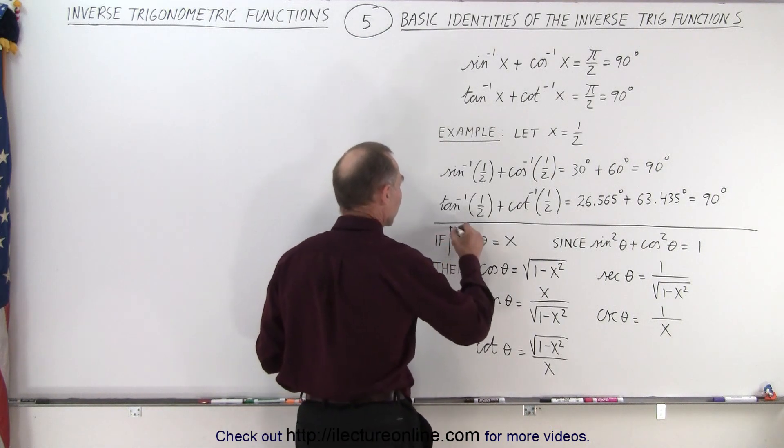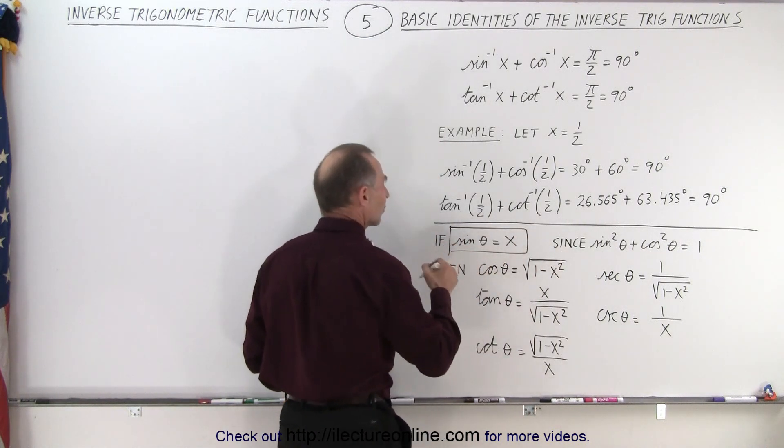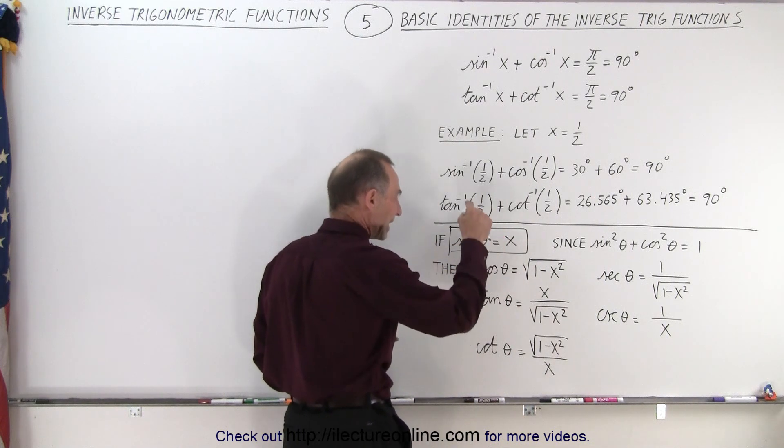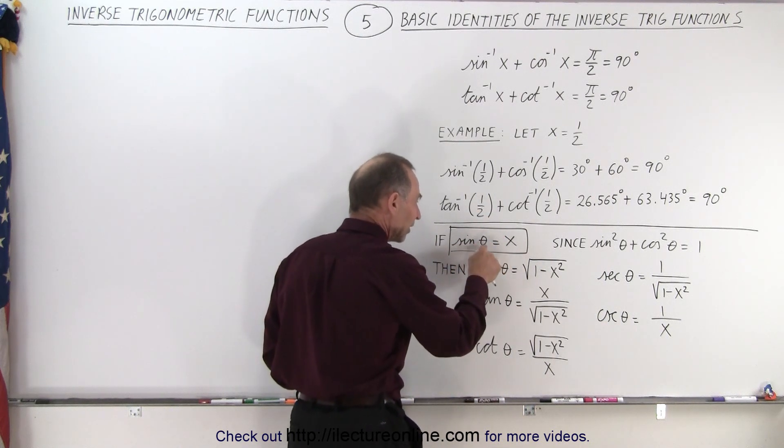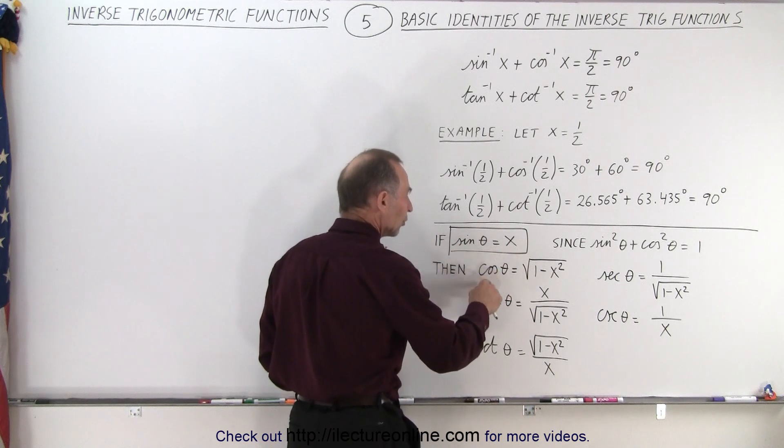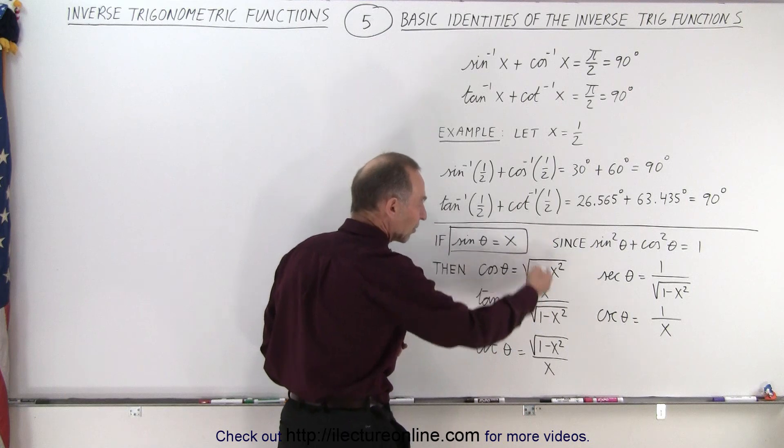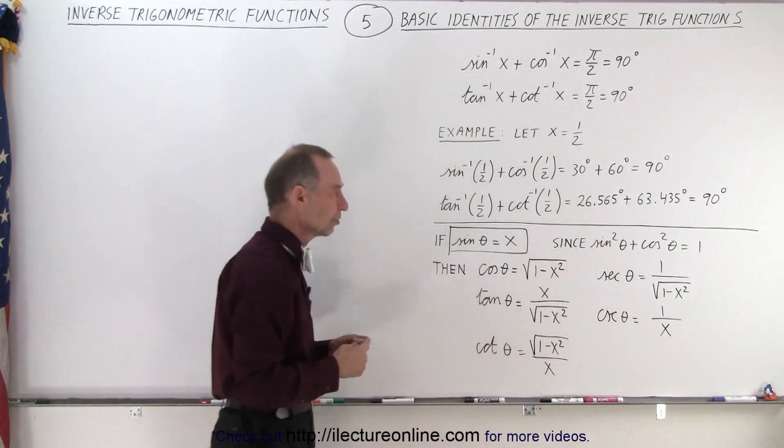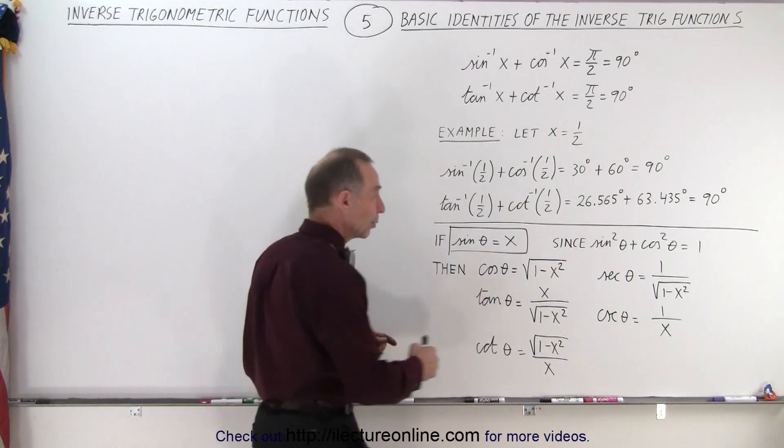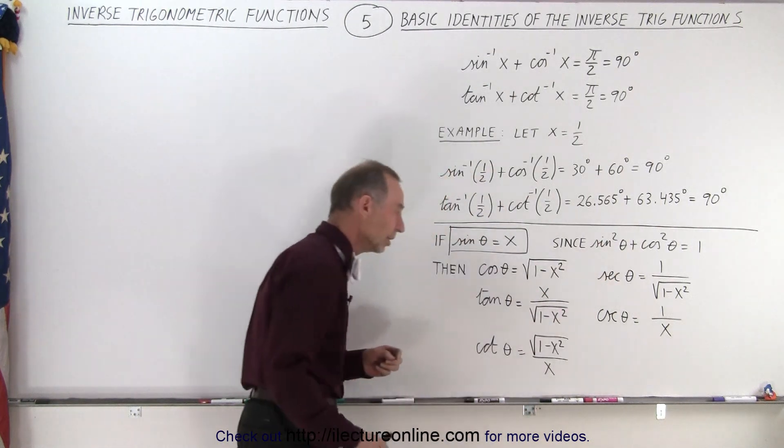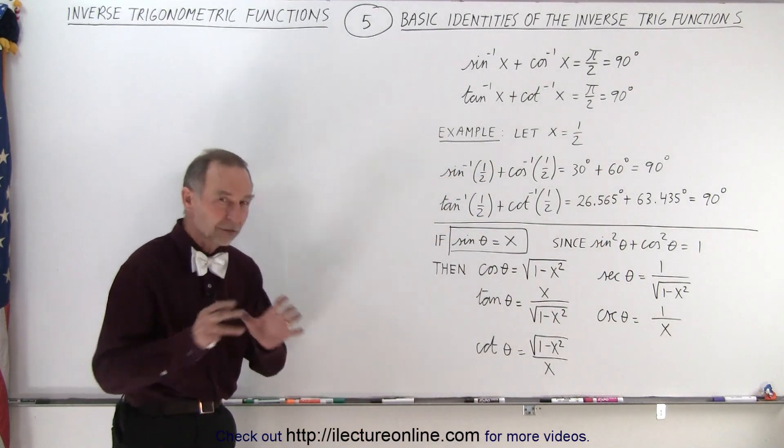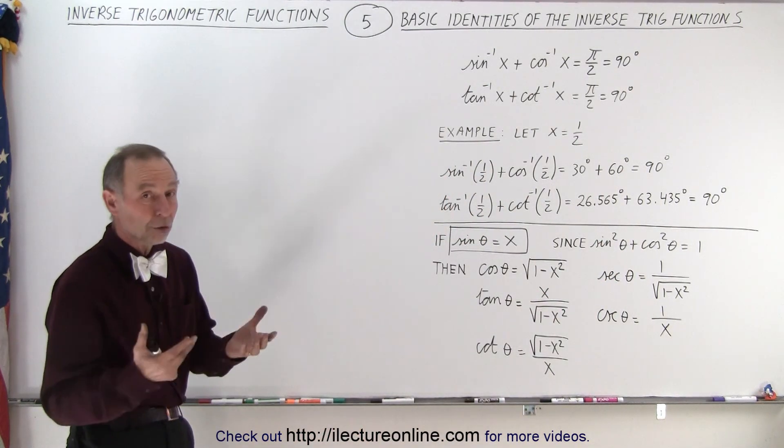If we start out with the premise that the sine of theta equals x, whatever that number is, so for a given angle the sine of that angle equals x, then for the same angle the cosine, the tangent, the cotangent, the secant, and the cosecant can then be expressed in terms of these following expressions. Of course that is because we realize that this is indeed true. So those are some of the basic relationships. You'll see a lot more of those later on.